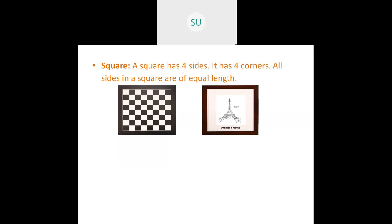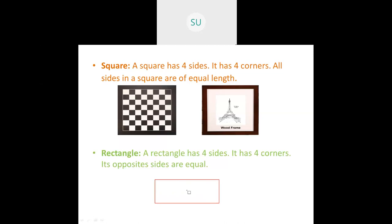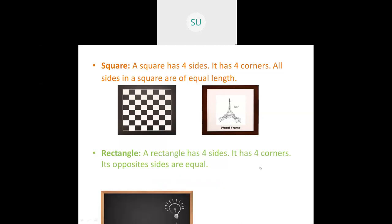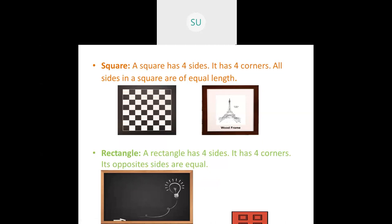A rectangle has four sides and four corners, just like a square, but all its sides are not equal — only the opposite sides are equal. The two long sides are equal to each other, and the two short sides are equal to each other. An example of a rectangle is a blackboard or a door, which is rectangular in shape.